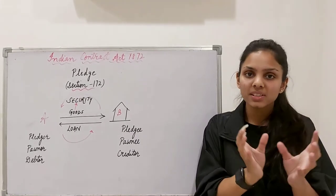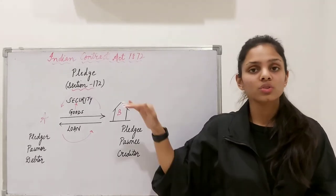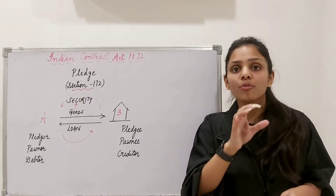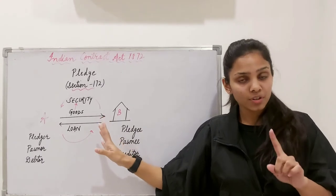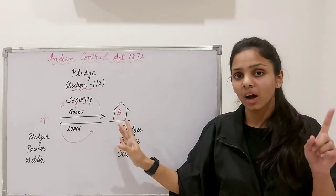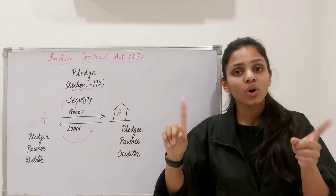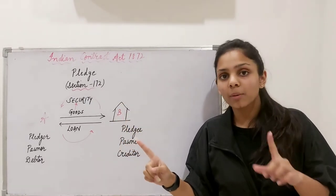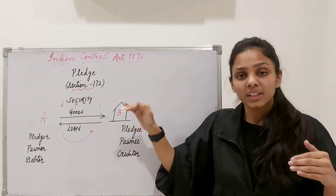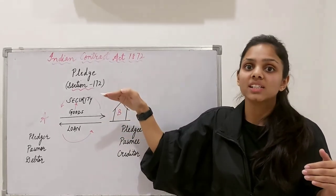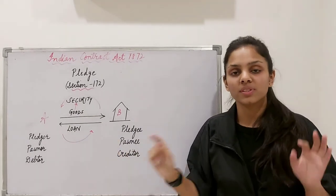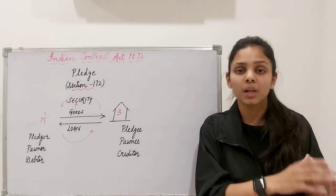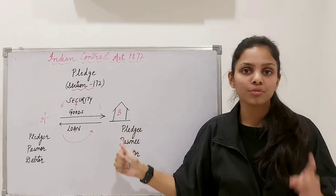I hope the basics of Contract of Pledge are clear. According to the formal definition under Section 172 of the Indian Contract Act, pledge is nothing but a special type of bailment — bailment of goods as a security. Now you know how it is a bailment: in both there is transfer and delivery of physical possession of goods from one person to the other. In bailment it may be for any specific purpose, but here the specific purpose is that goods act as a security for repayment of loan or performance of a promise. Moreover, bailment can be a gratuitous contract, but in pledge, there will always be consideration.